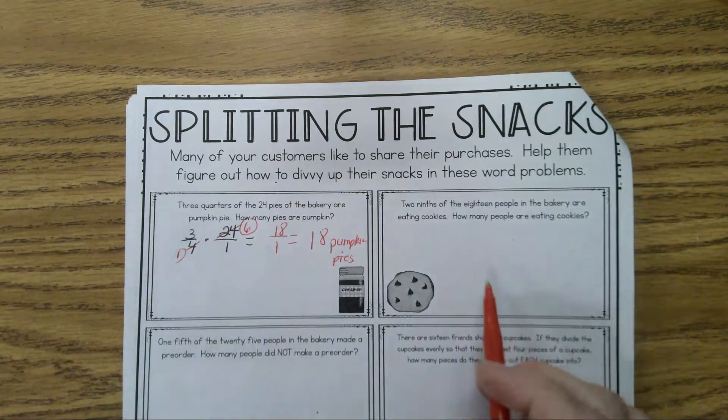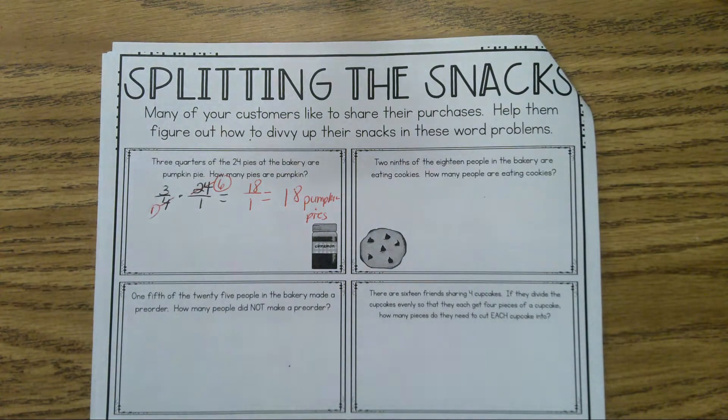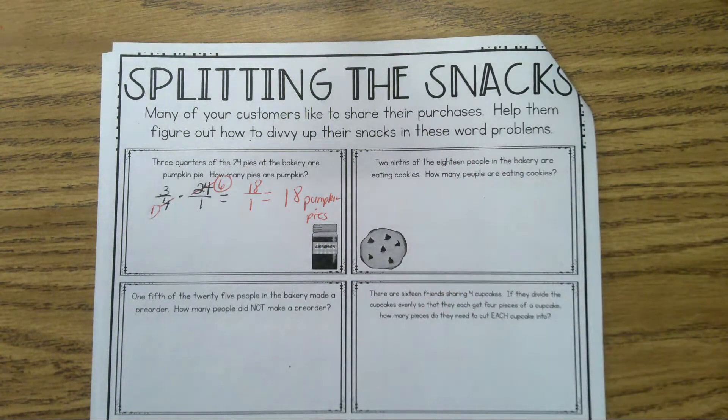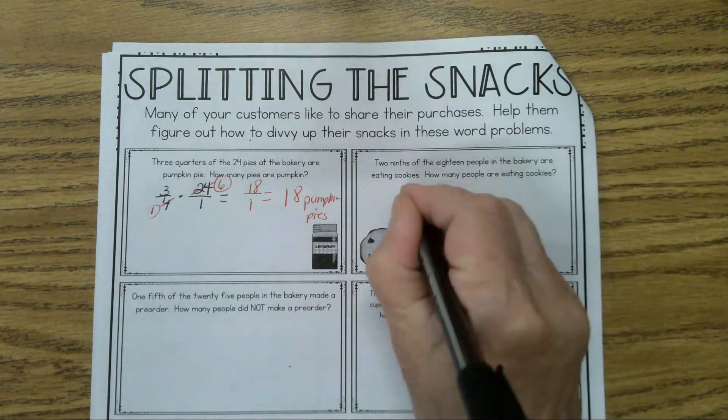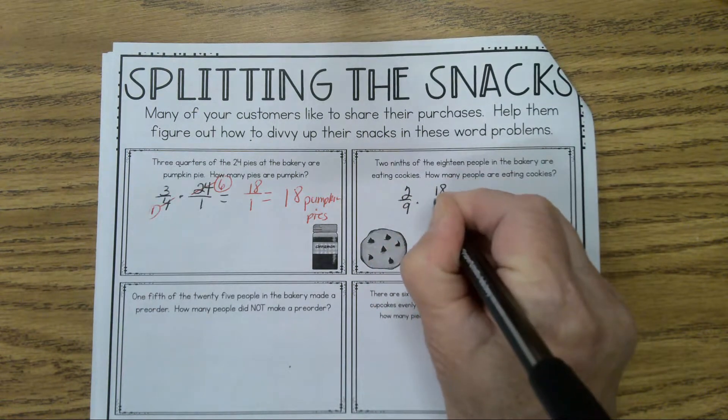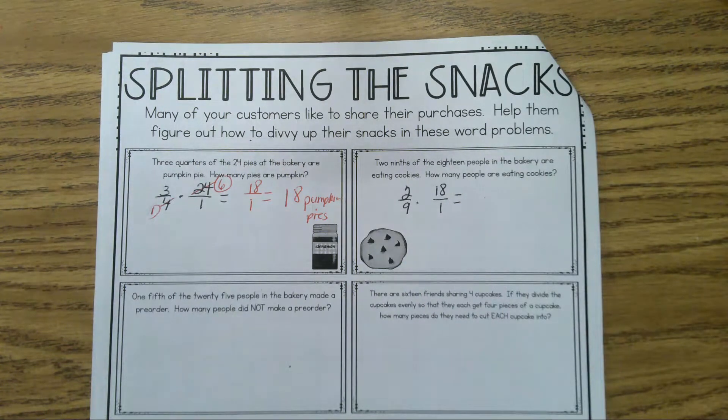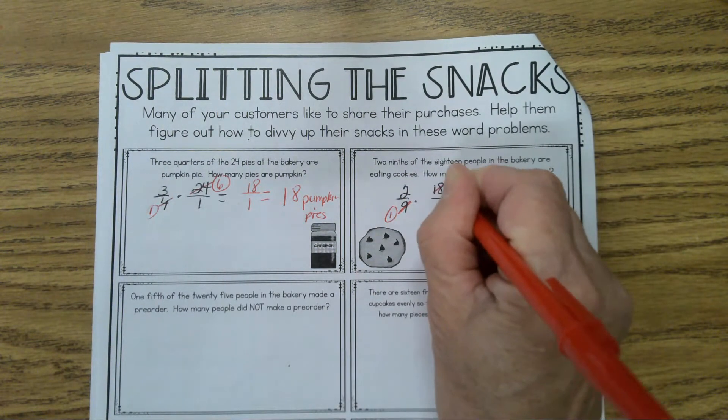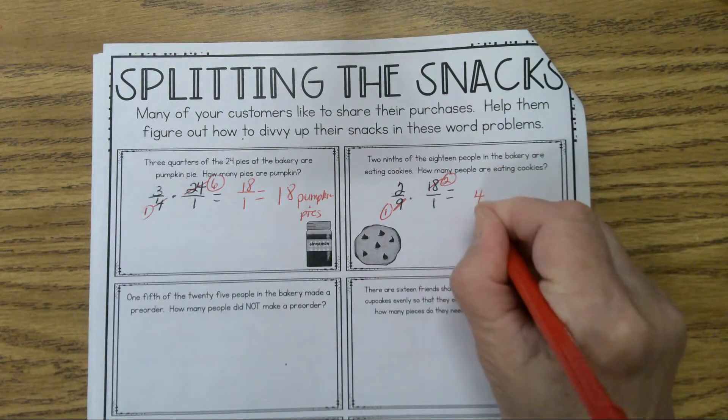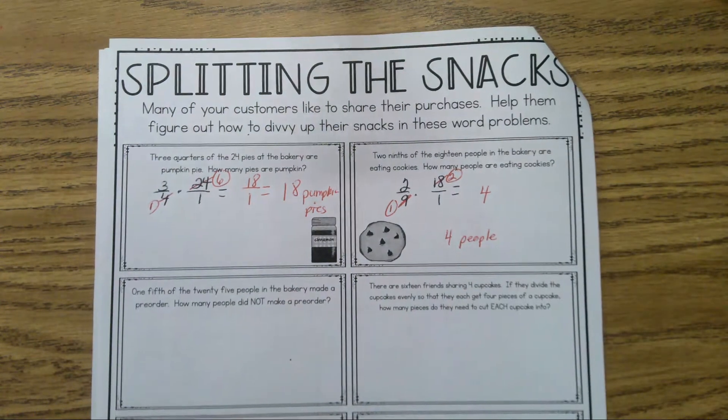Let's go on to the next one, the one with the chocolate chip cookie. Owen reads the problem. What are we going to do for this one? Multiply 2/9 times 18 over 1. Since we're multiplying fractions, can I simplify before I multiply? Yes. 9 divides 9 once, 9 divides 18 two times. 2 times 2 is 4. 4 people. Any questions? Very nice job kids.